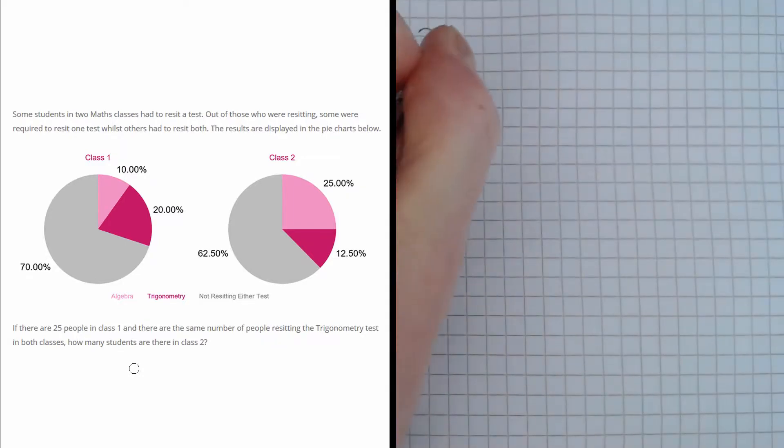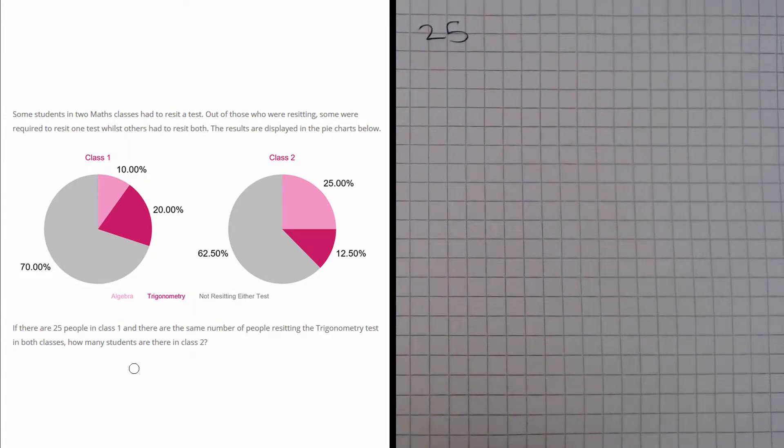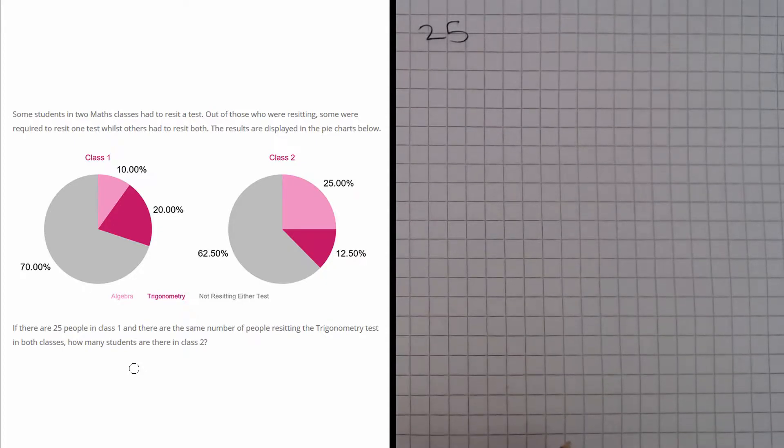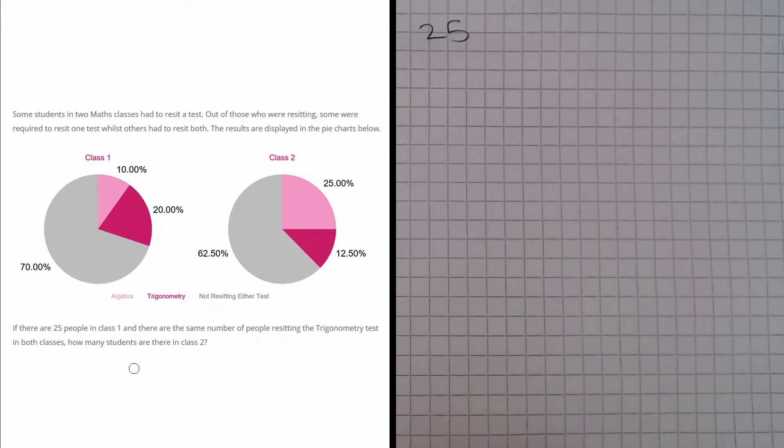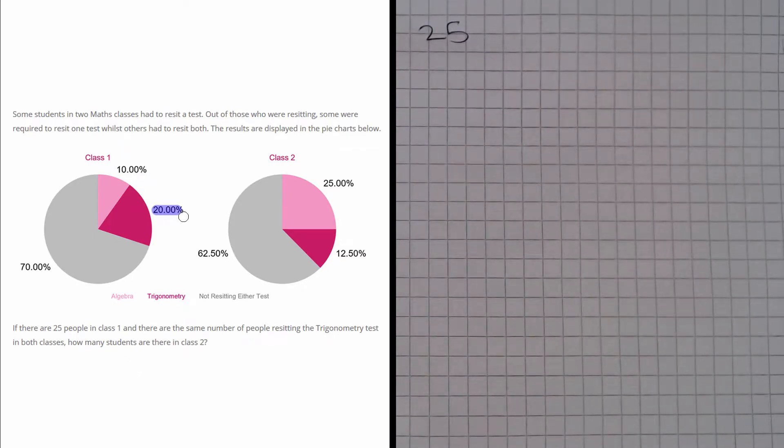We know there are 25 people in class 1, and we know that there are the same number of people resitting the trigonometry test in both classes. If we look at the pie chart here for class 1, we can see that 20% of the students in class 1 are resitting trigonometry.